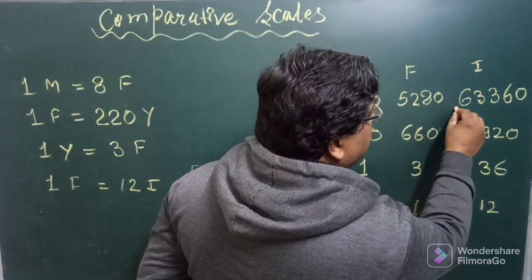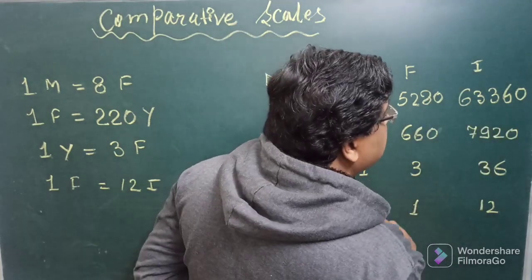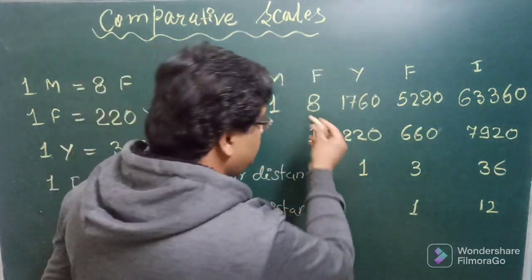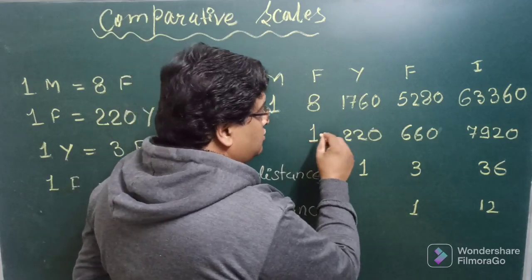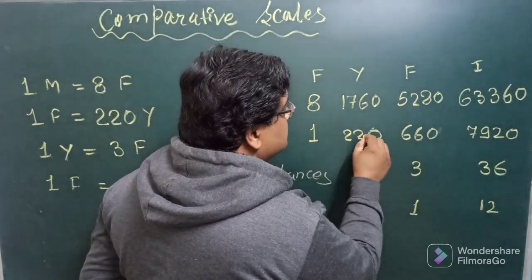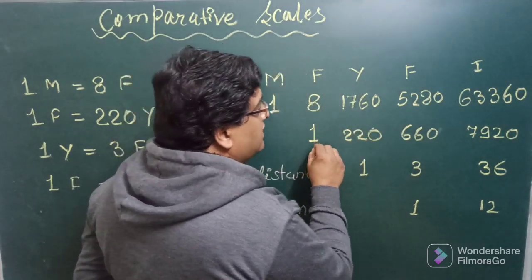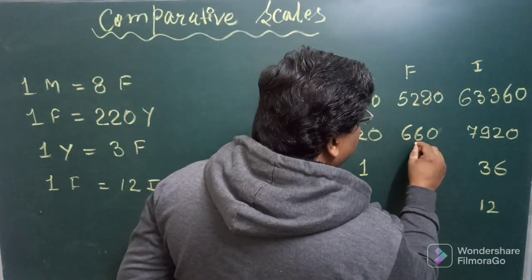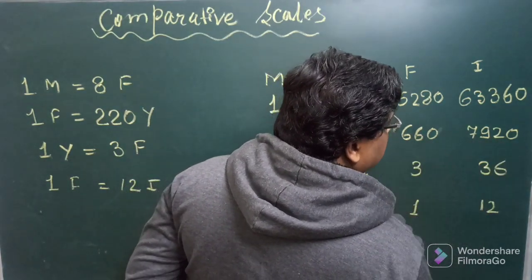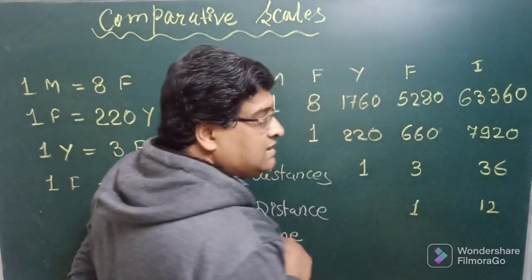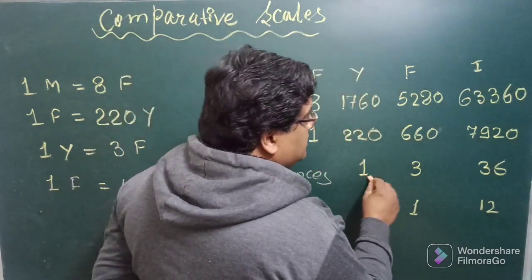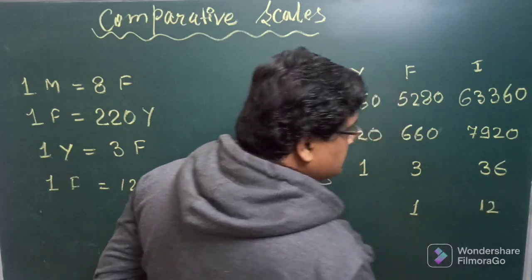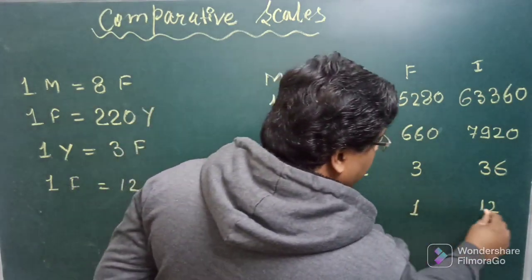One mile equals 1,760 yards, 5,280 feet, and 63,360 inches. One furlong equals 220 yards, 660 feet, or 7,920 inches.